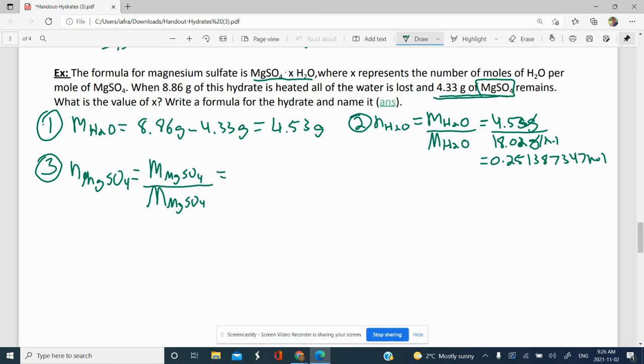That's going to be 4.33 grams over the molar mass of magnesium sulfate. Magnesium is 24.31 plus sulfate, which is 32.07, plus 64 because it's four oxygens. So 120.38 grams per mole. Cross out the grams there. We get 4.33 divided by our answer, we get 0.03596943 moles of the magnesium sulfate.